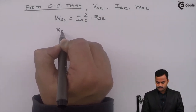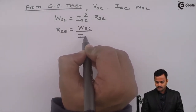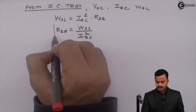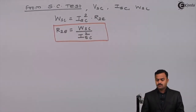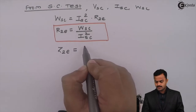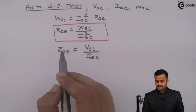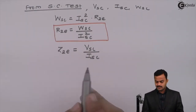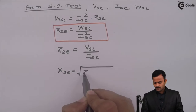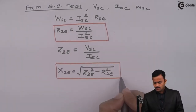From this I can get R2E equal to WSC divided by ISC². Voltage and current are known, so I can get impedance Z2E equal to VSC divided by ISC. From resistance and impedance I can get reactance: X2E equals the square root of Z² minus R².